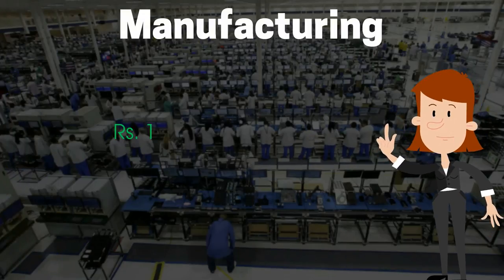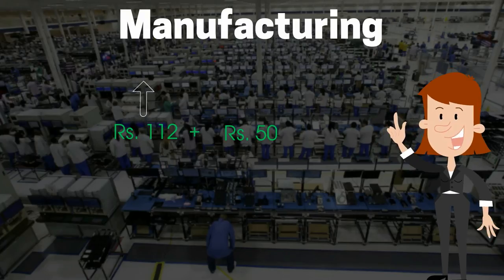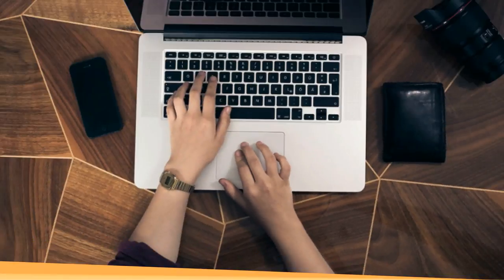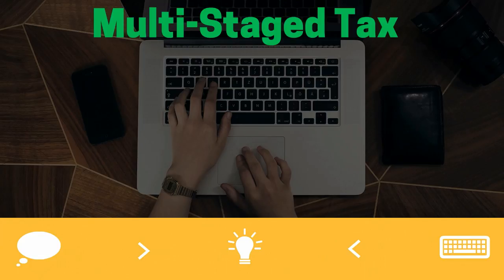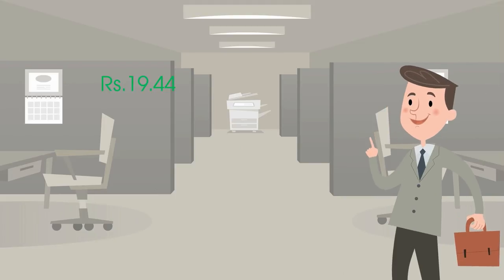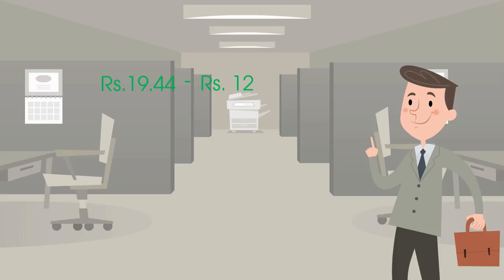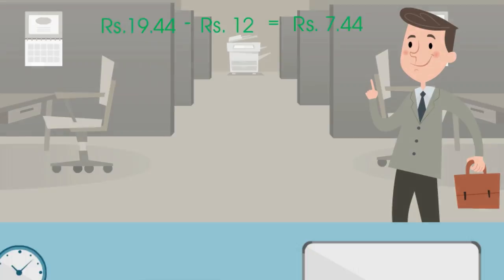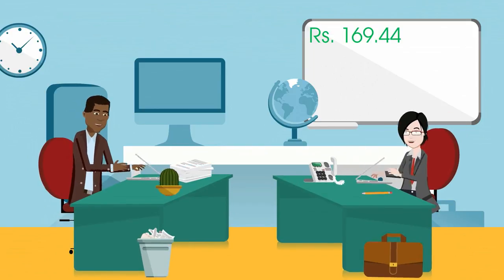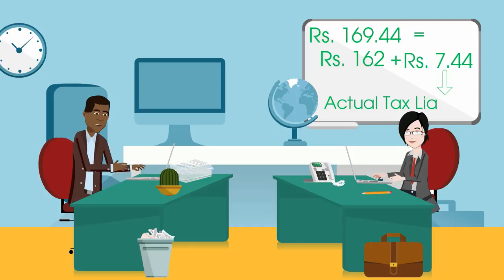In the second stage of manufacturing, the initial cost includes 112 rupees as raw material cost, 50 rupees as value addition, and 12 rupees for tax paid in the previous stage, totalling 162 rupees. As GST is a multi-stage tax, it will be charged at 12% on 162 rupees, which comes to 19.44 rupees. But the actual tax liability will not be 19.44 rupees as GST allows for deduction of input tax credit. As the manufacturer had already paid 12 rupees on procurement of raw materials, it will be allowed as input credit and actual tax liability will come down to 7.44 rupees, making the total cost of manufacturing 169.44 rupees.